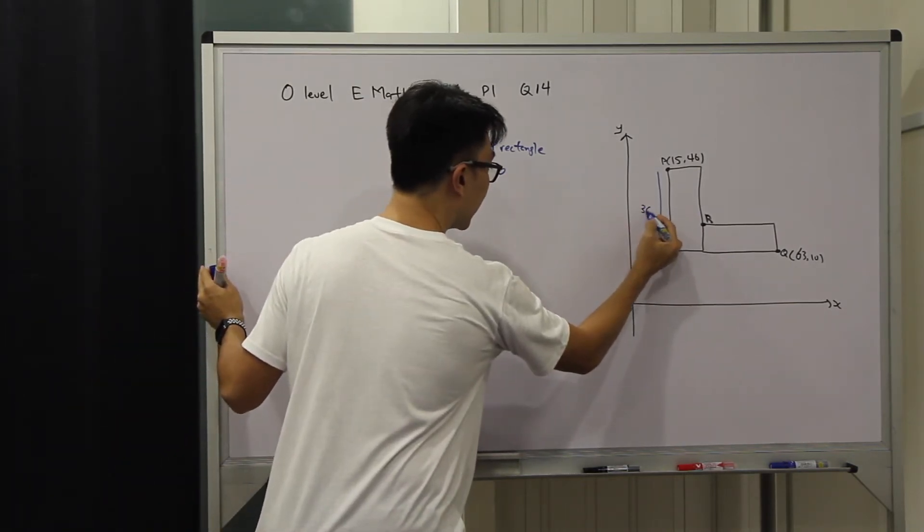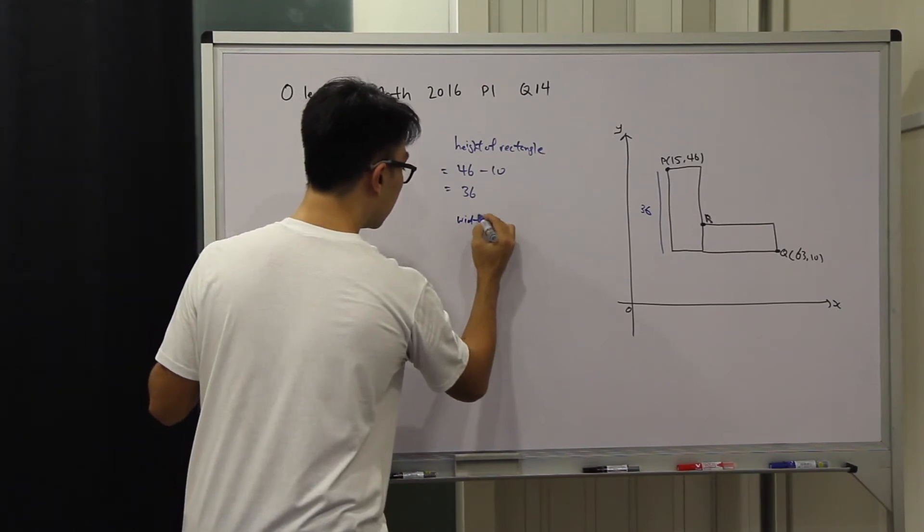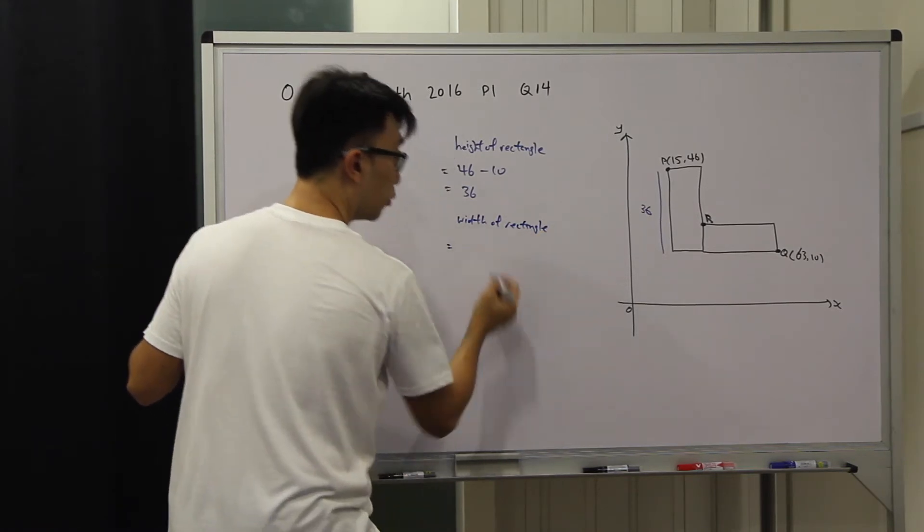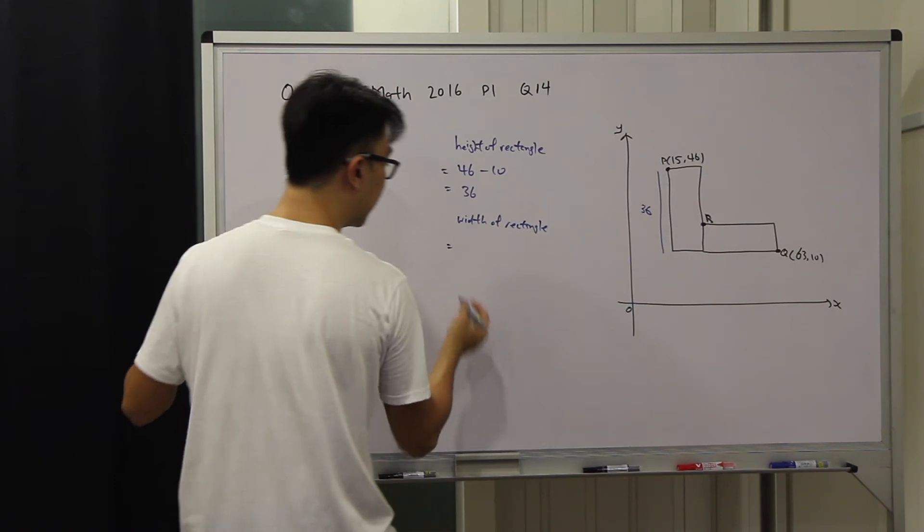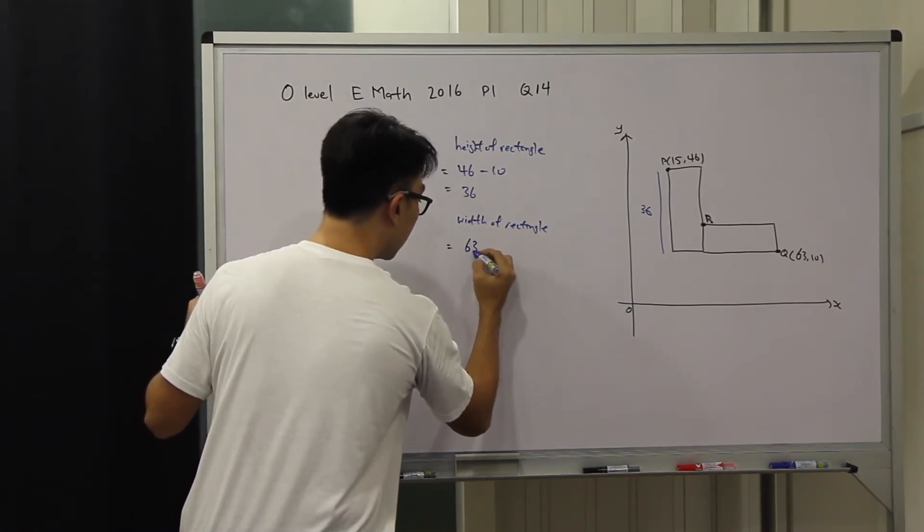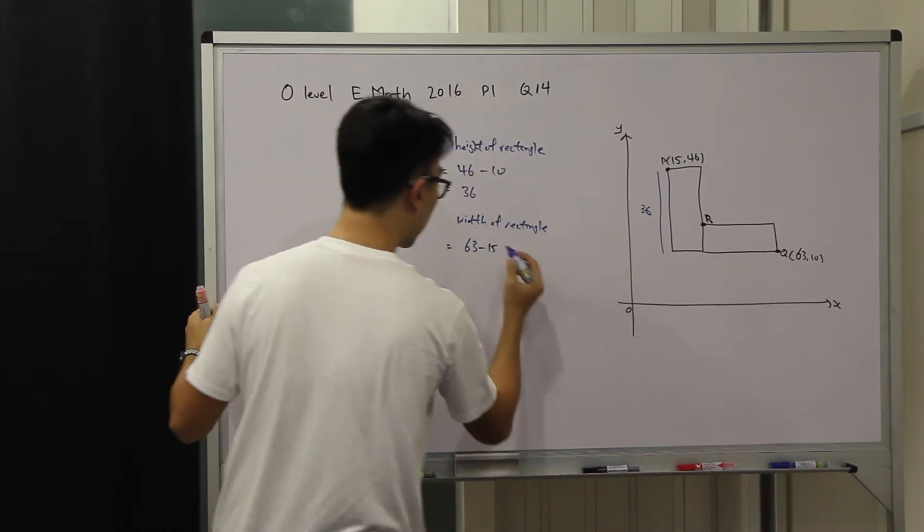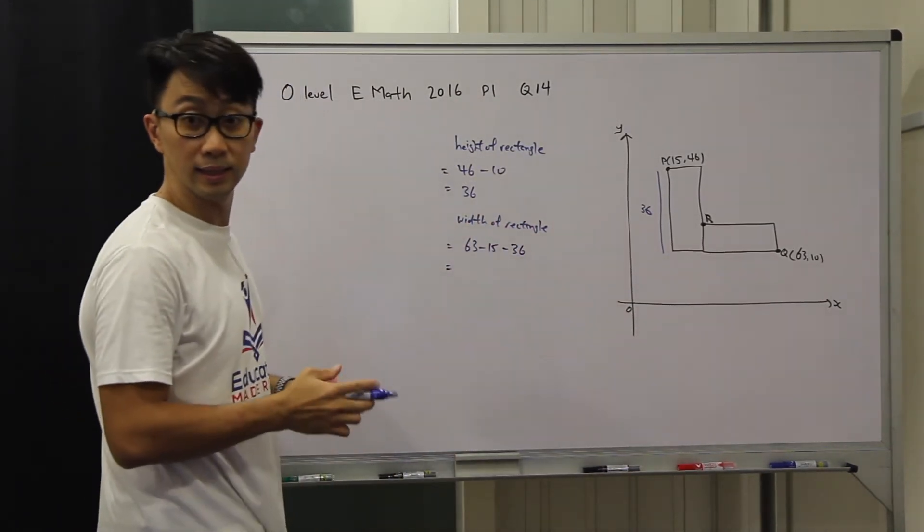Next, let's find the width of the rectangle. We can use the x-coordinate: 63 minus 15, and then minus the height, minus 36. That will give us 12.